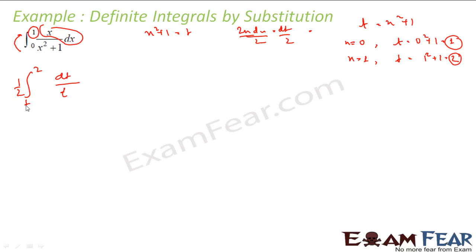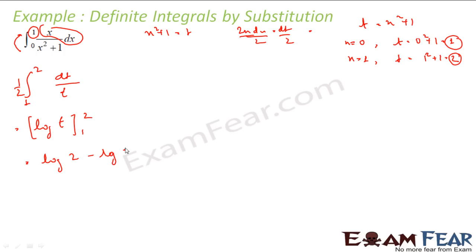So I will be taking 1 to 2 here. This becomes (1/2)∫(1/t)dt from 1 to 2. And this is nothing but (1/2)[log t] from 1 to 2. This becomes (1/2)(log 2 − log 1). Since log 1 = 0, the answer is (1/2)log 2.